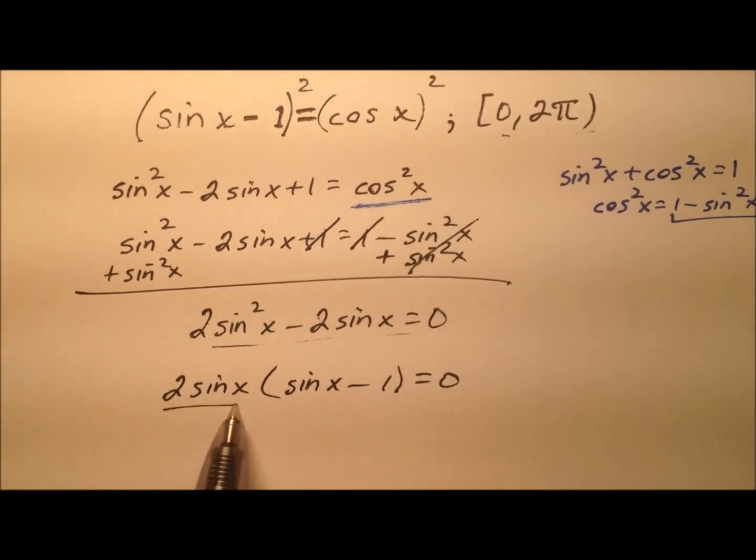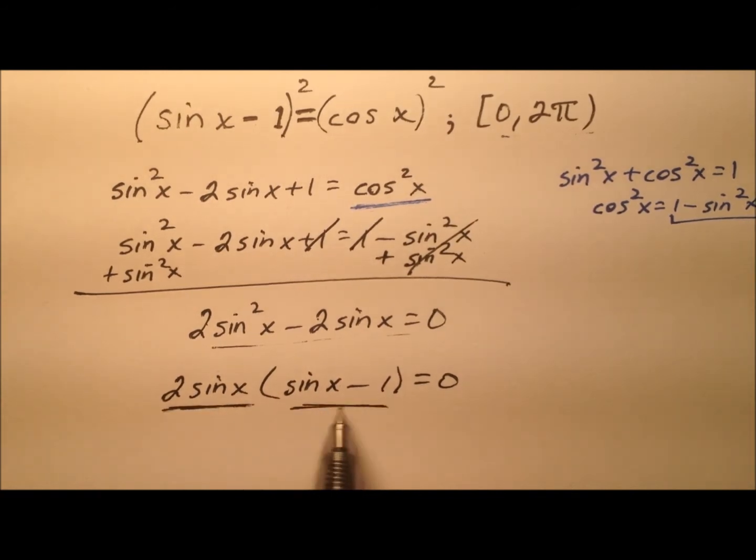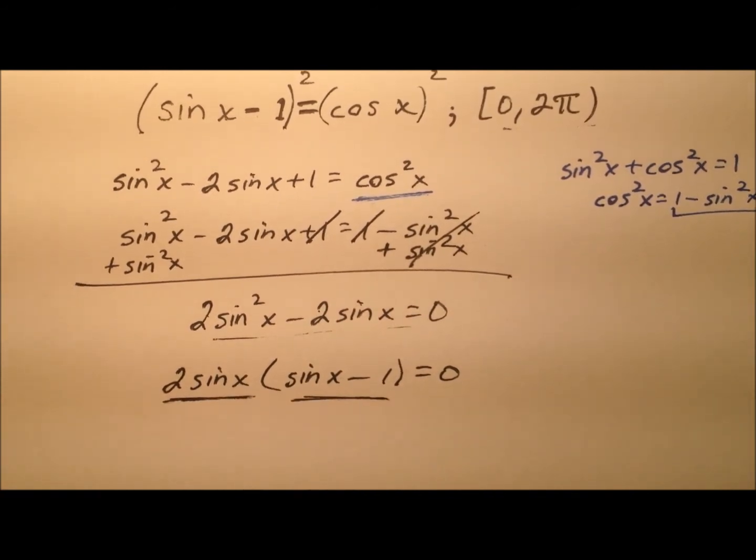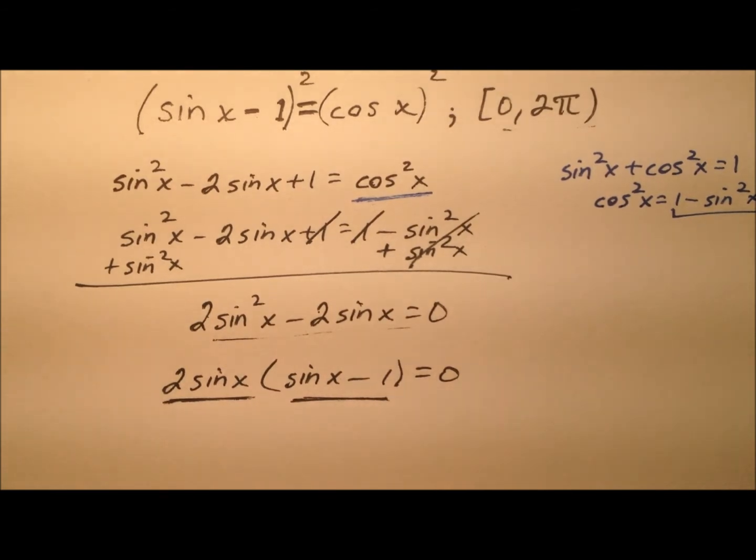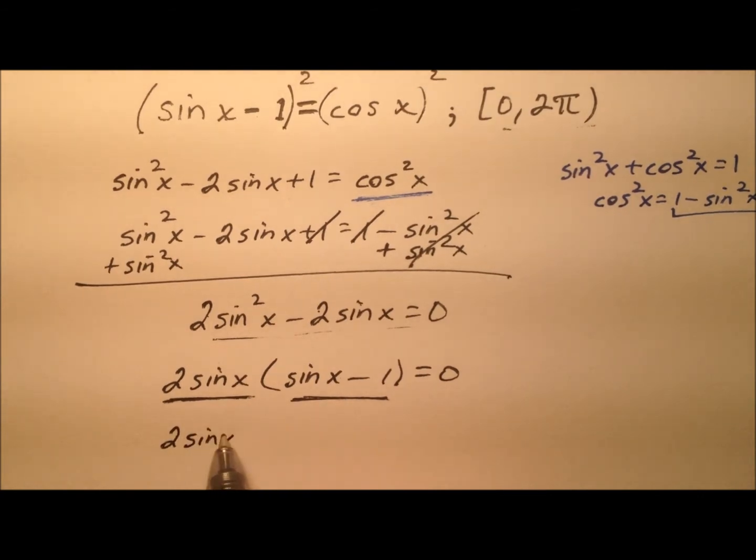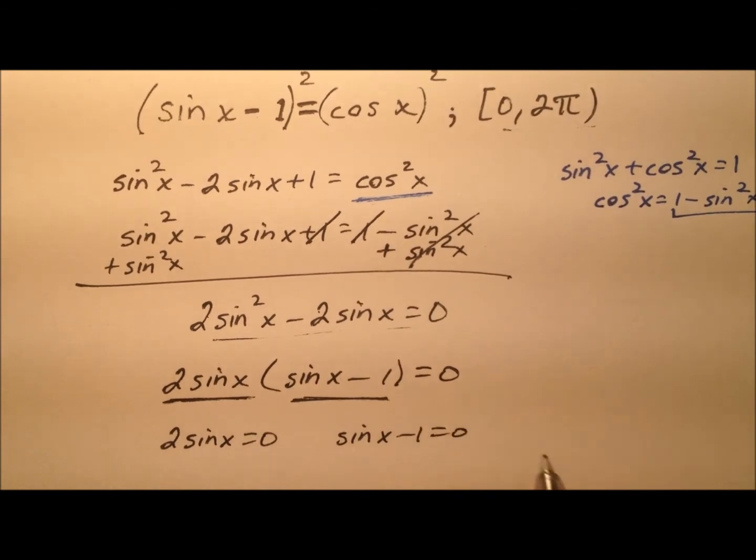So I have multiplication here with this factor and this factor and I get 0, so the zero product property for multiplication tells us that at least one of these has to be 0. So let's account for both of those and we'll say 2 sine x equals 0 and sine x minus 1 equals 0.